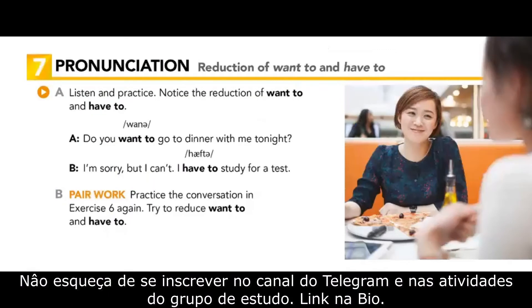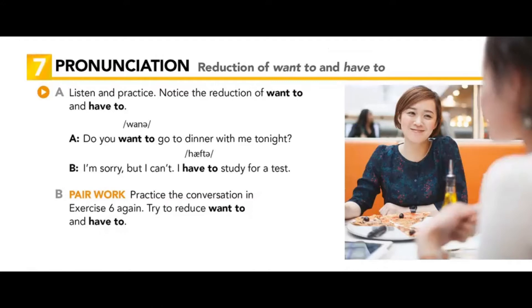We are going to talk about pronunciation and reduction of want to and have to. Remember that in English we have contractions like isn't or I'm. This is a contraction. A contraction is when we make it shorter when we are talking and when we are writing.